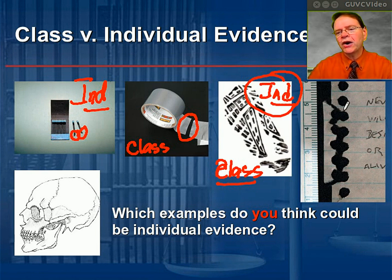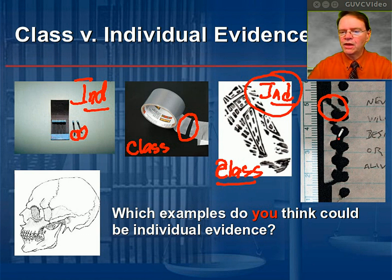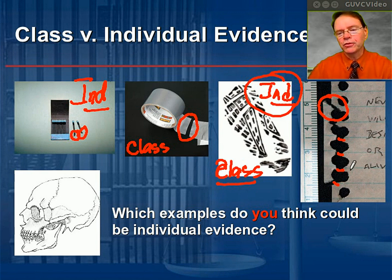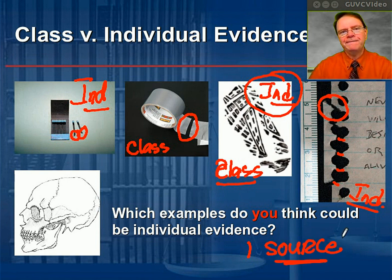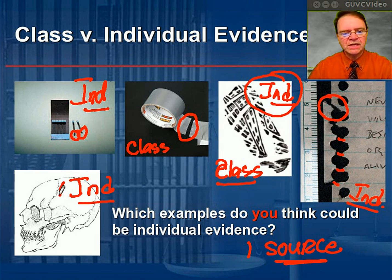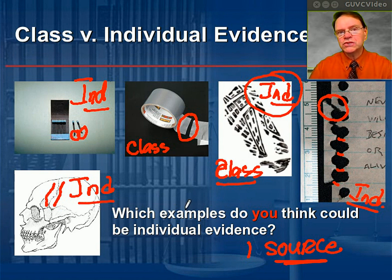Moving on to the paper tear — much like the matchbook, if we have a complementary pattern of tears where they perfectly match, that indicates this fragment of paper came from no other piece of paper than the one pictured. So those paper fragments are individual evidence — one source. And the same with the bones found in the skull. Not everyone's suture lines — where you can see the bones growing together — are going to be exactly identical. That pattern of where the joints come together, called sutures, is considered individual evidence.